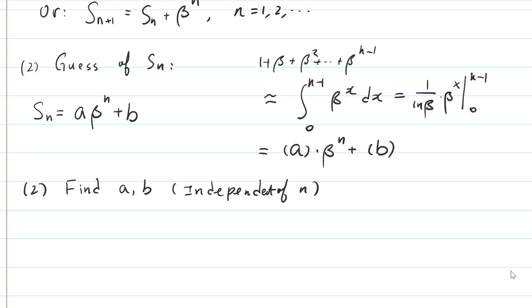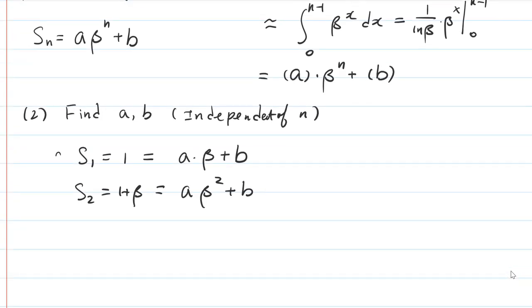And how do we do that? Again, we say S1 is going to be equal to 1, and then we will have A beta plus B. S2 is 1 plus beta, and that's going to be A beta squared plus B. So we have two equations.